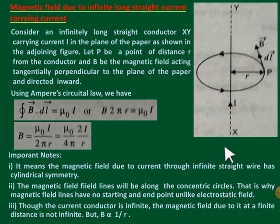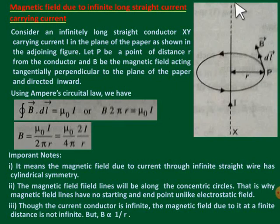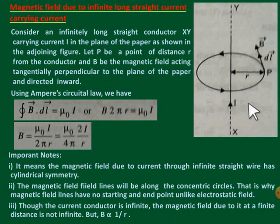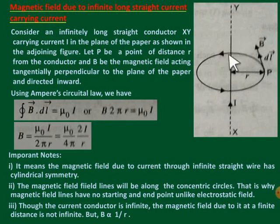Even though the current-carrying conductor is infinitely long, the magnetic field due to this infinitely long straight conductor is not infinite — it has a finite value given by B = μ₀I / 2πr. From this expression, we also see that the magnitude of the magnetic field B is inversely proportional to the distance r — the perpendicular distance of the point of observation from the current-carrying conductor.